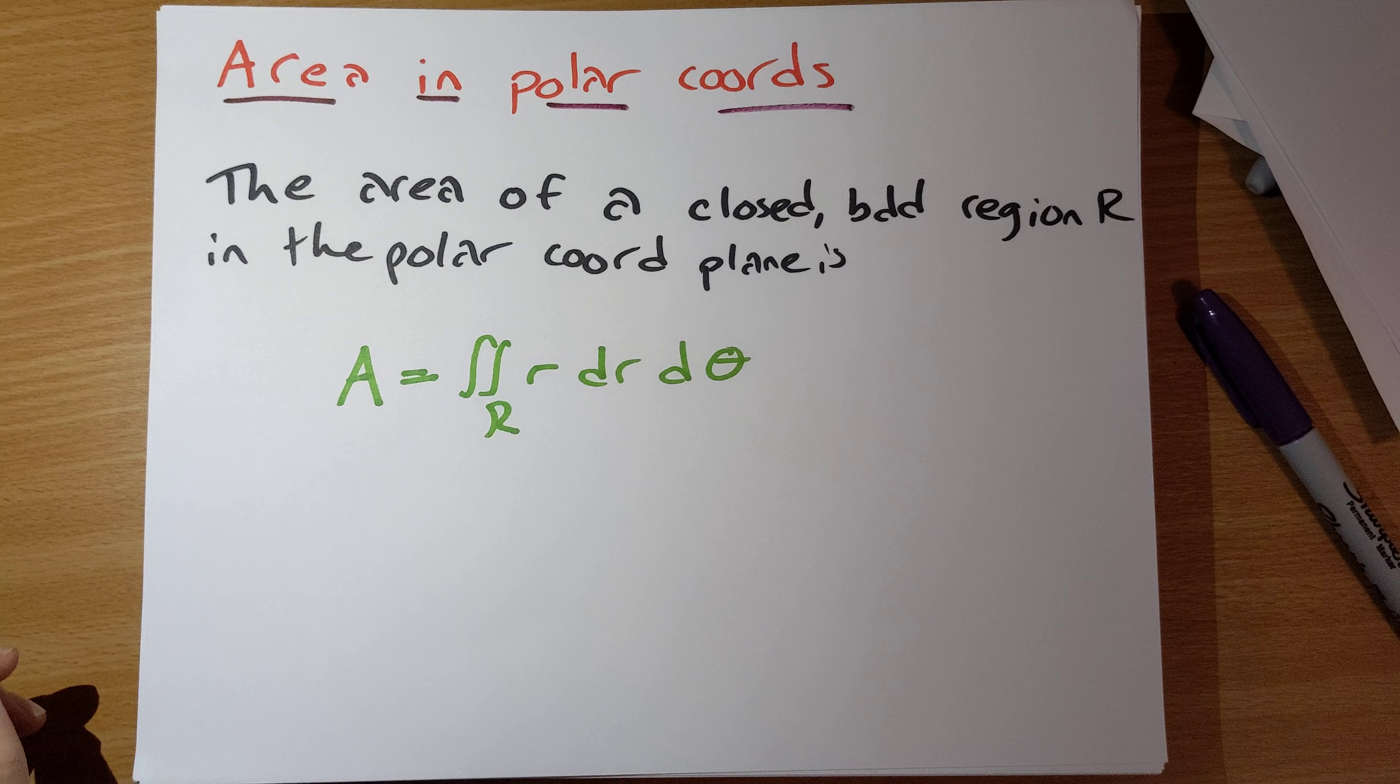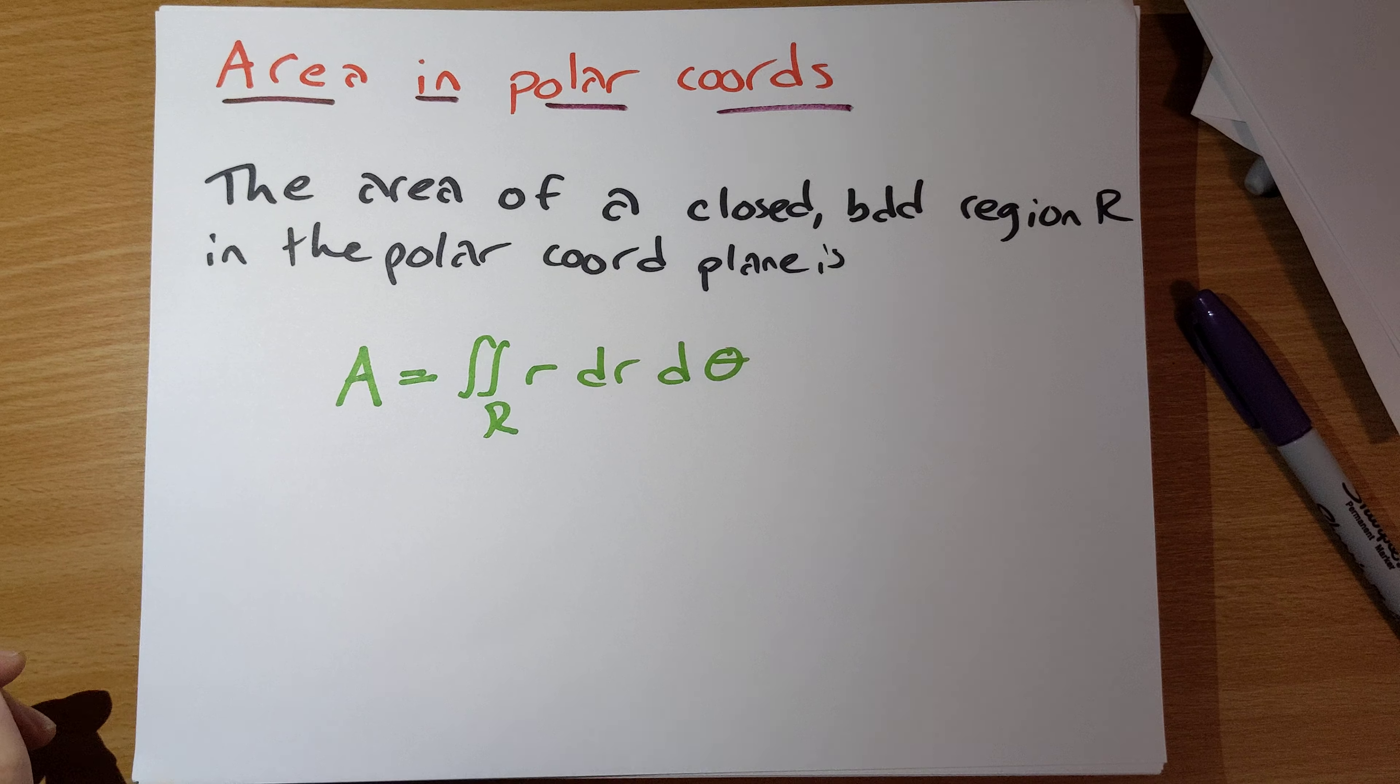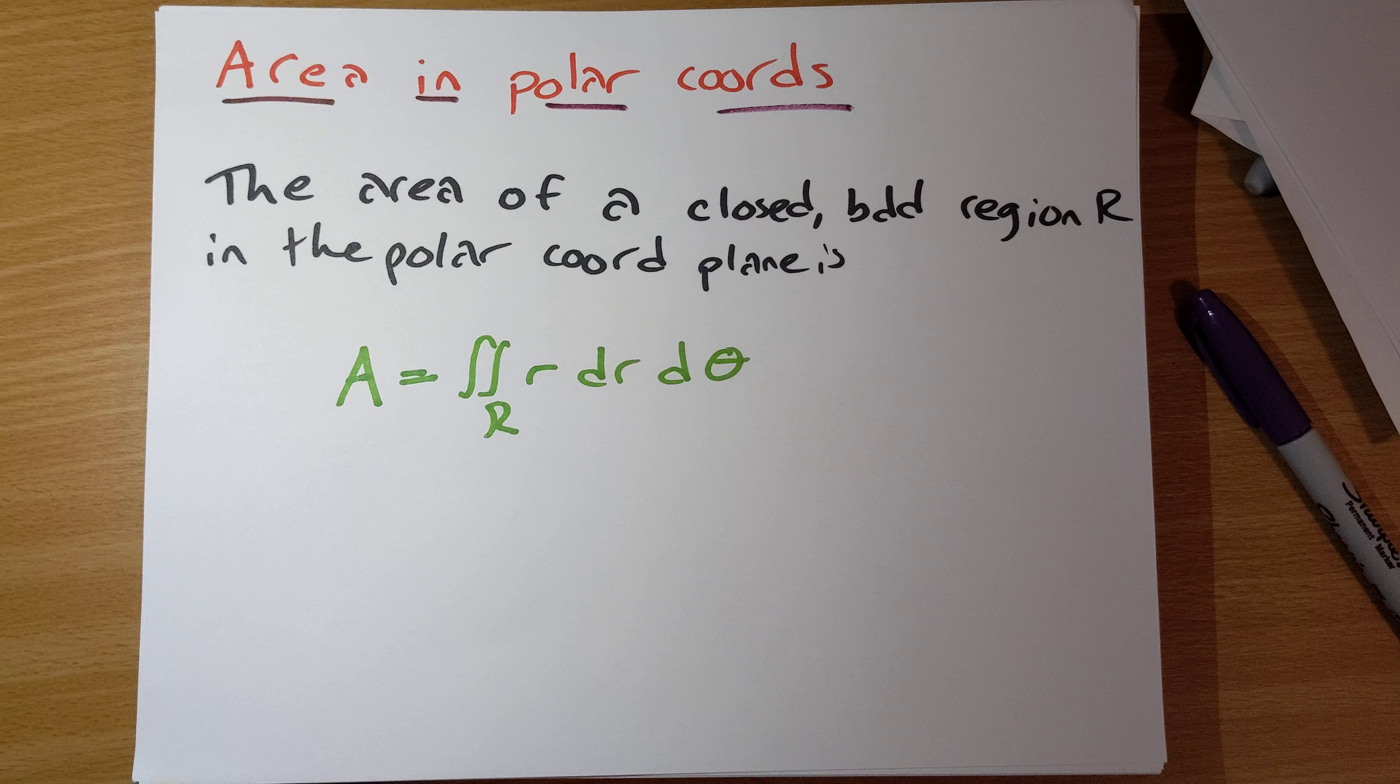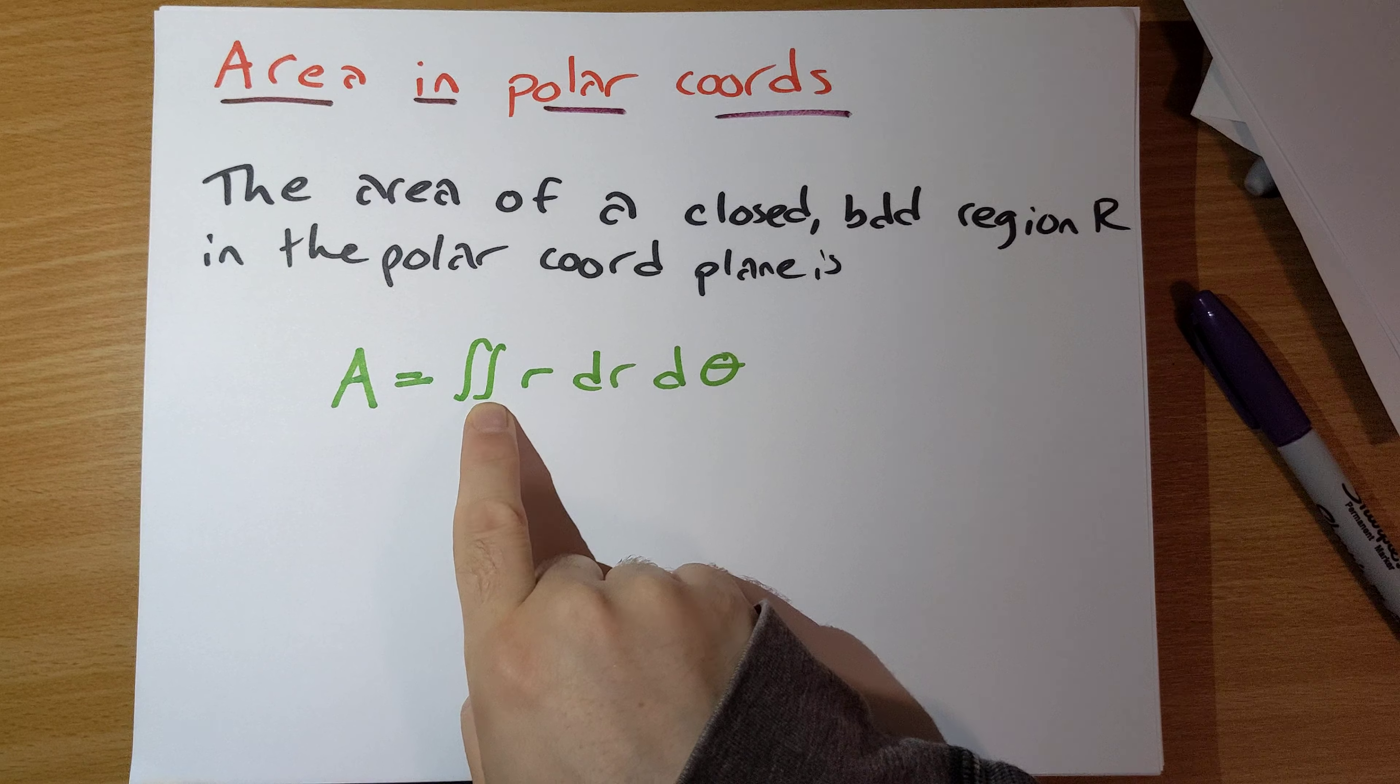We can also use polar coordinates integration to find area of regions. And so here's our formula for area in polar coordinates. The area of a closed boundary region R in the polar coordinate plane is found by doing a double integral over R of r dr dθ.